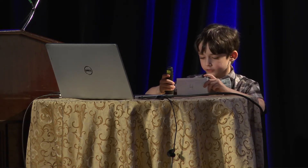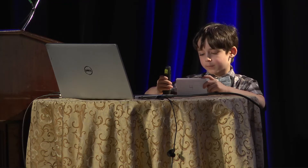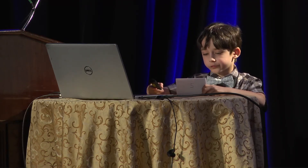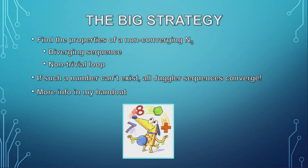Also using the inverse function, we can see that if there are any juggler sequences which don't converge, there will be an infinite number, because every number in the sequence will have many predecessors. The big strategy for finding a proof is to try and figure out the properties of a number whose juggler sequence doesn't converge. There are two scenarios where that would happen: either a juggler sequence that diverges, or a sequence that loops. There are no trivial loops, which means any loop would have to be very complicated. I have a proof that there can't be a trivial loop in the handout. If we can show that a number whose sequence doesn't converge can't exist, then we've got a general proof.